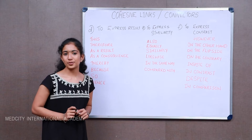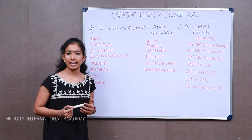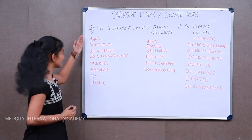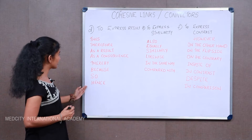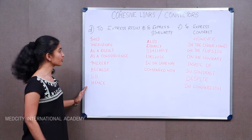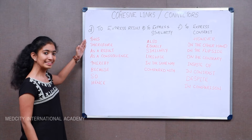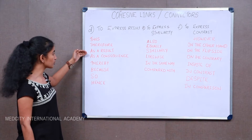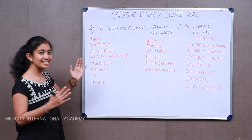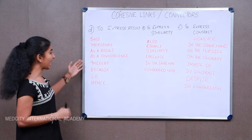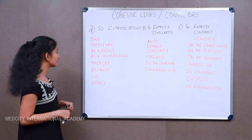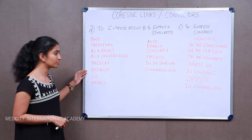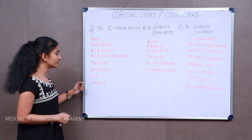Now let's look at a few connectors that can help you to show result or consequence. The following words can help you show result: thus, therefore, as a result, as a consequence, thereby, because, so, hence.